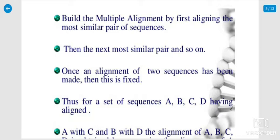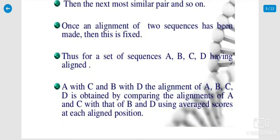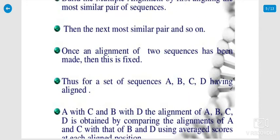Once the alignment of two sequences has been made, it is fixed. Thus, for a set of sequences A, B, C, D: align A with C and B with D. The alignment of A, B, C, D is obtained by comparing the alignment of A and C with that of B and D, using average residues at each aligned position.